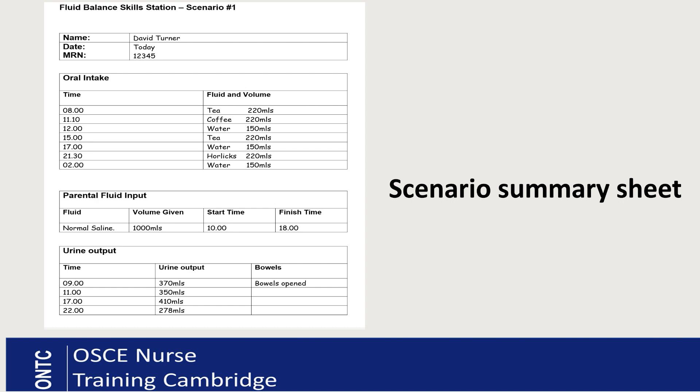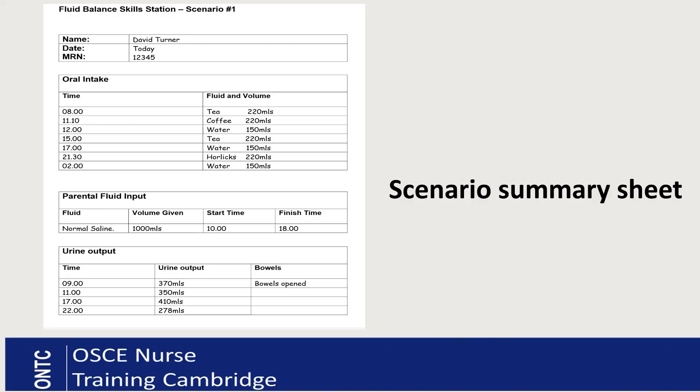Let's look at the patient scenario summary sheet. You work out a scenario for just one patient — there are rumors that the test center asks you to do four fluid balances in 12 minutes, but it is just one patient scenario. The scenario summary sheet includes your patient name, details, MRN number, and the oral intake showing what your patient had to drink in the last 24 hours.